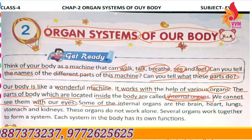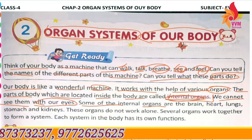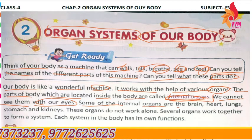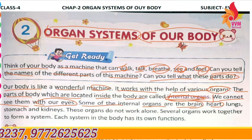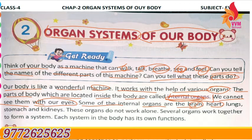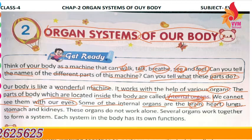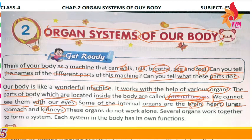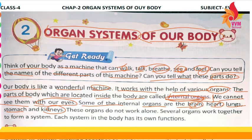Some of the internal organs are the brain, heart, lungs, stomach, and kidneys. All these parts are internal organs.